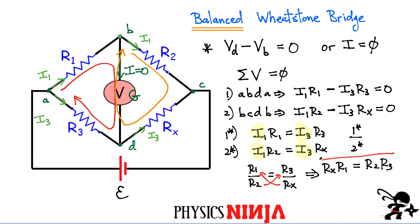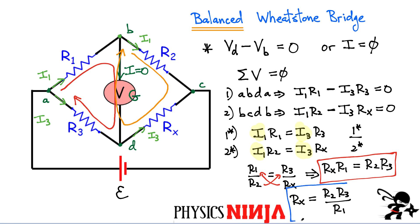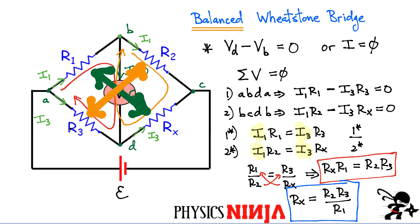This is the key equation we need. Solving for Rx directly: Rx = R2·R3 / R1. So if we know R1, R2, and R3 and we measure zero current through the center branch — meaning the Wheatstone bridge is balanced — the unknown resistance equals this expression. An easy way to remember this without redoing all the steps: notice that you are multiplying resistances that are diagonal from each other in the circuit. Cross-multiplying the diagonal resistors gives the equation in the red box, and it's straightforward to solve for the unknown resistance.